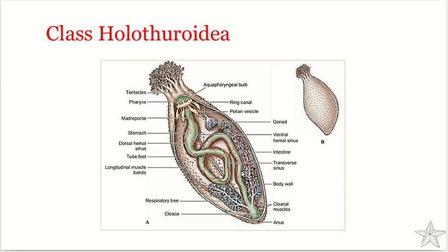The coelomic fluid helps in distributing respiratory gases, waste, and nutrients. A pair of tubes called the respiratory tree attaches to the rectum and branches throughout the body cavity of the sea cucumber. It is a tree-like, highly branched structure. The pumping action of the rectum circulates water into these respiratory tubes.